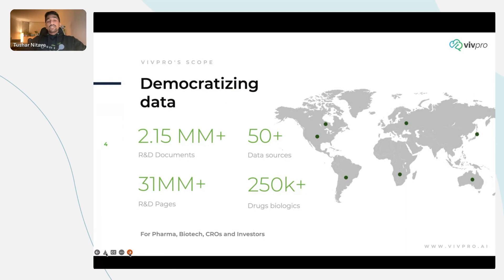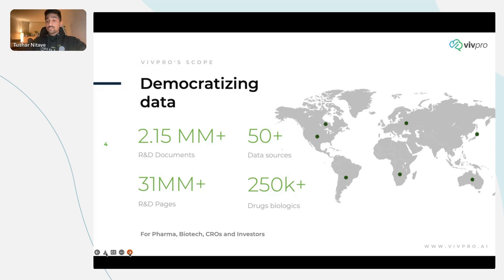In terms of data and volume, we currently have more than 2 million publicly available regulatory documents indexed and searchable in RIA. We source data from more than 50 data sources, which translates to more than six to seven regulatory agencies around the world. This includes US FDA, EMA, Australia, China, Japan, Canada, all of Europe, etc. Using this, you can also search for more than 250 approved drugs and biologics.